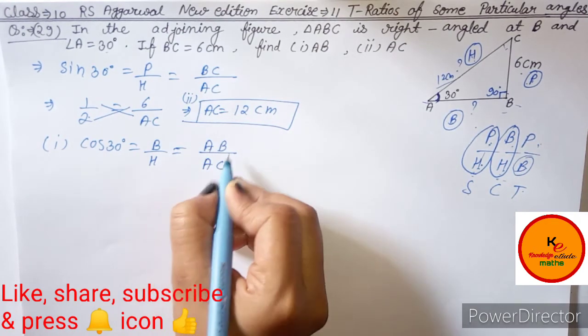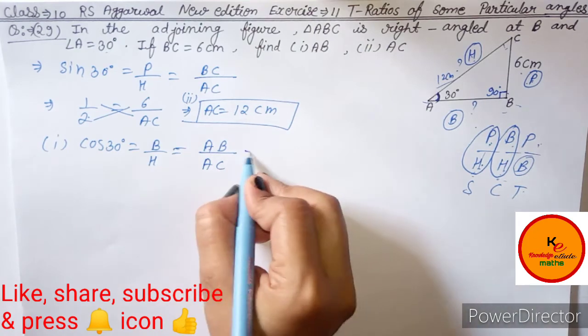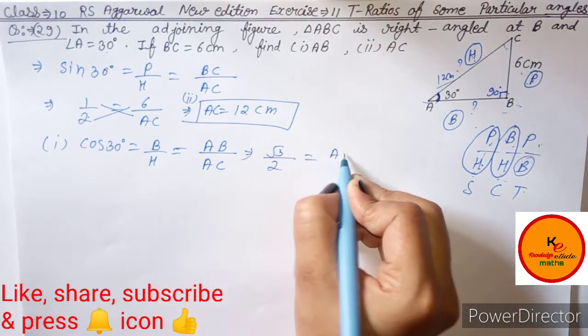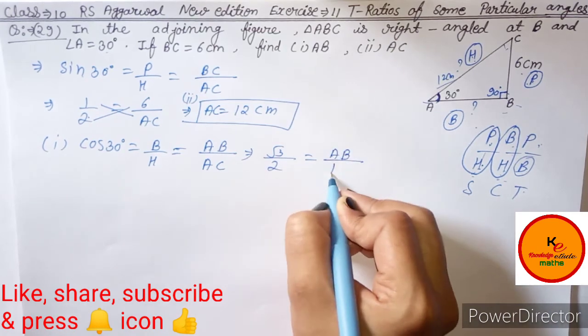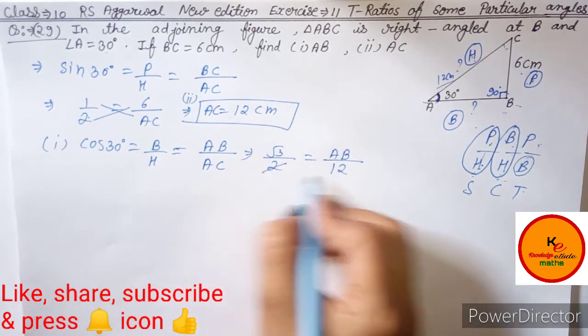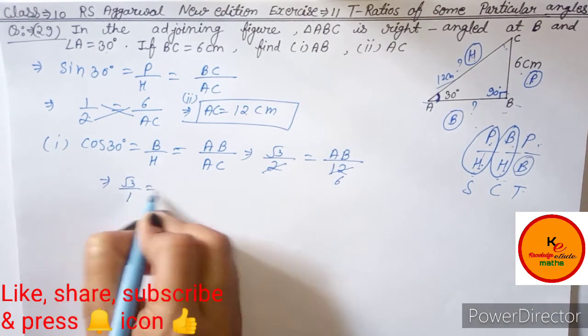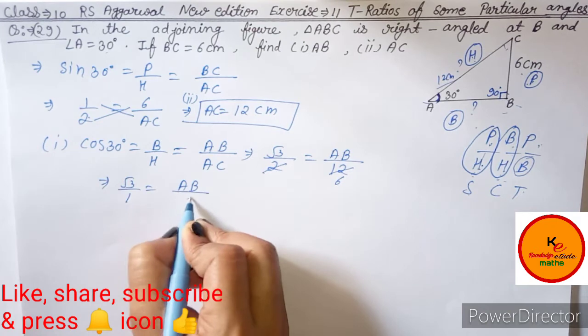The value of cos 30 is root 3 by 2, equal to AB upon AC value 12 cm. Cross multiply: 2 will cancel, so AB times root 3 equals 12.